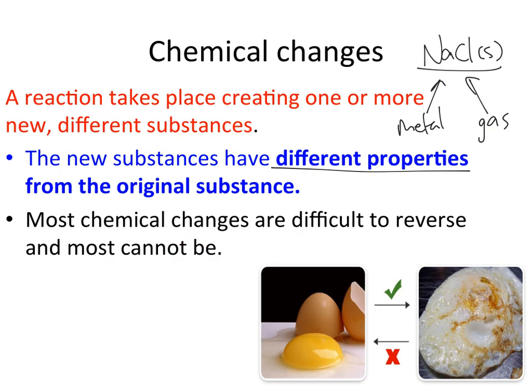One thing about chemical changes is that most of them can be very difficult to reverse, and some you can't reverse at all. For example, once we cook this egg and denature the proteins, we're not going to be able to get back to the egg. So most chemical changes are very difficult to reverse, if reversible at all.